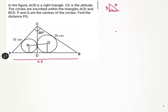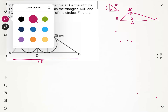Now that we have found AB = 25, let us proceed further. In any right angle triangle, if we drop an altitude from the 90-degree vertex to the hypotenuse, we get two smaller triangles. We should notice that these three triangles — the left side triangle, the right side triangle, and the bigger triangle — are all similar triangles.